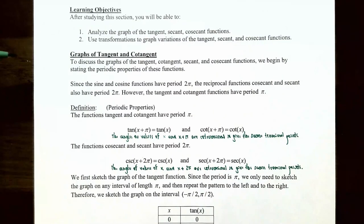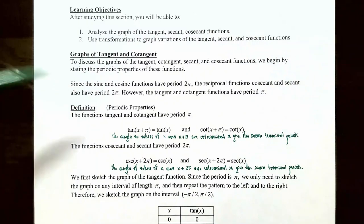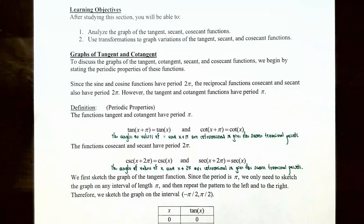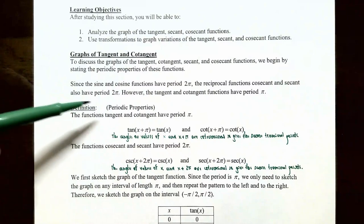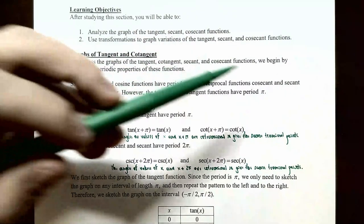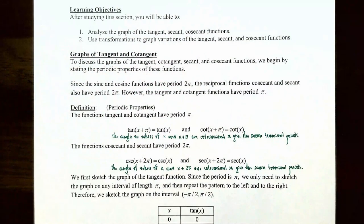Let's talk about the graphs of tangent and cotangent. To discuss the graphs of the tangent, cotangent, secant, and cosecant functions, we're going to begin by starting with the periodic properties of these functions. Remember that the sine and cosine functions have a period of 2π, meaning their output values repeat every 2π radians. The reciprocal functions — cosecant and secant — will also have a period of 2π, because cosecant is 1 divided by sine and secant is 1 divided by cosine.